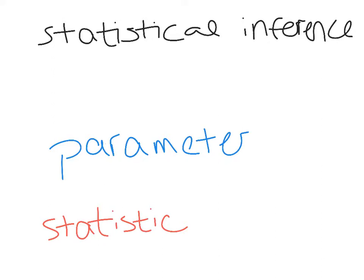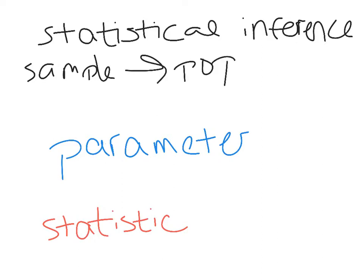Statistical inference is the information from the sample that we use to draw a conclusion about the larger population. We're taking the sample and trying to apply that to the entire population. We can use that to determine things like whether the sample has a similar mean to the population.